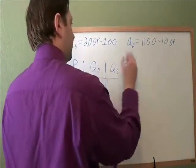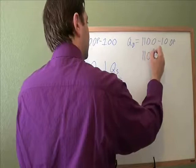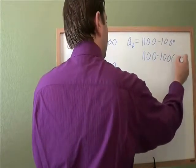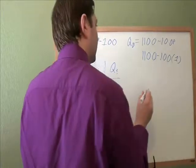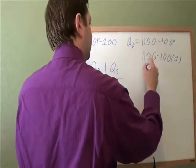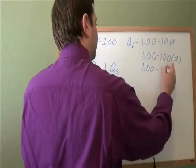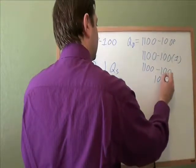So for $1, the quantity demanded is 1,100 minus 100. And where you used to have a p, you put a 1. 100 times 1 is 100. And 1,100 minus 100 is 1,000.